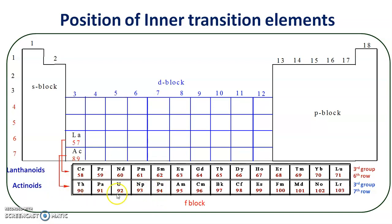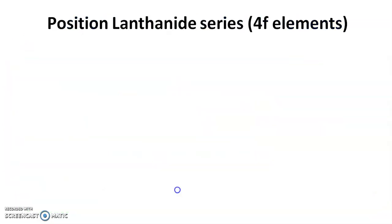So these are the actinoids — thorium to lawrencium, these 14 elements — and they are placed in the third group and seventh row. This is about the position of inner transition elements in the periodic table.